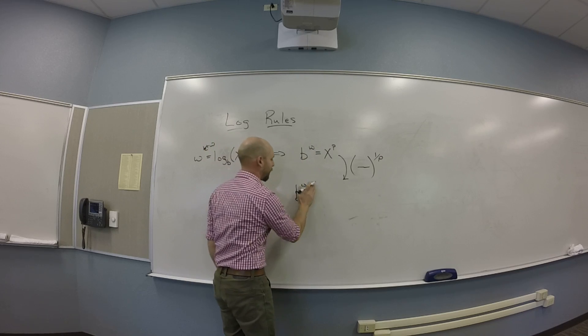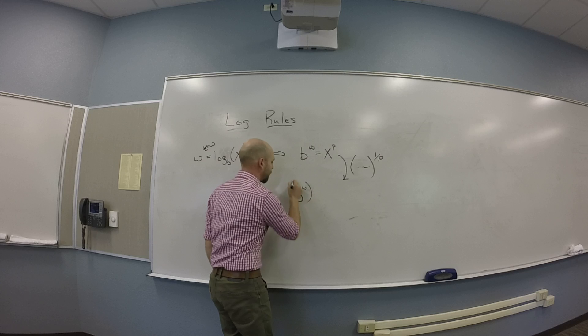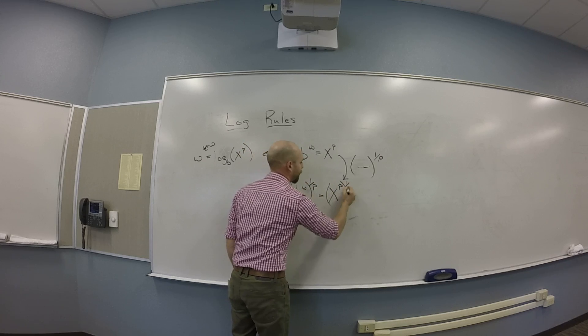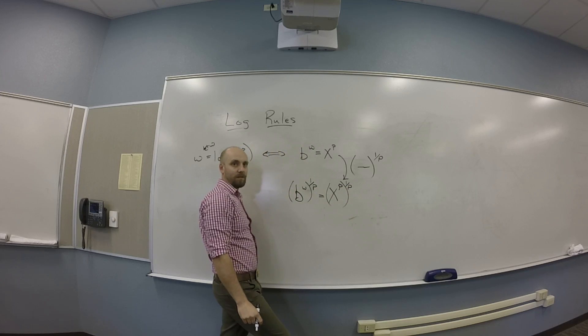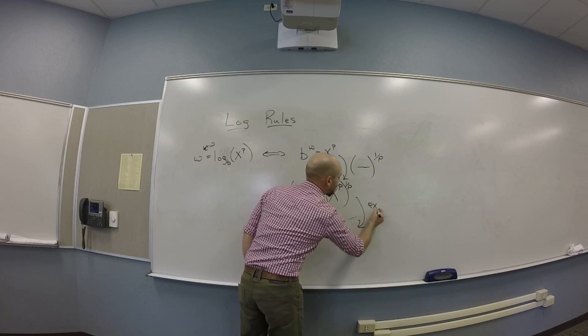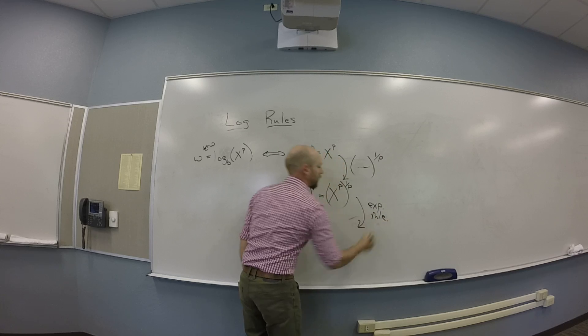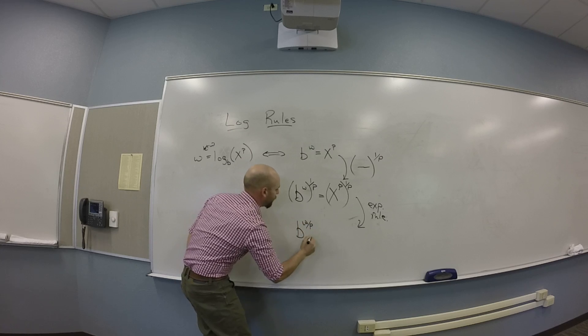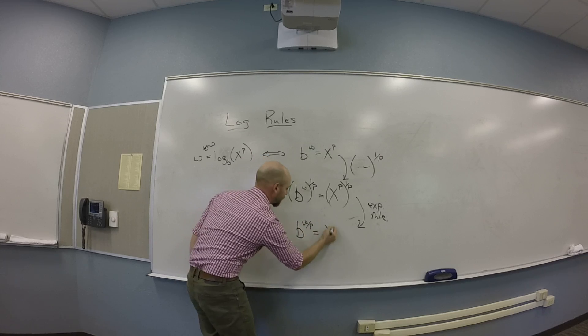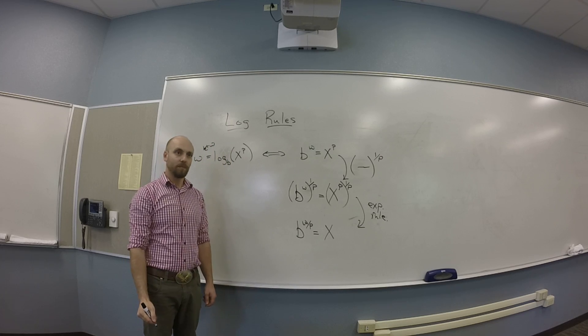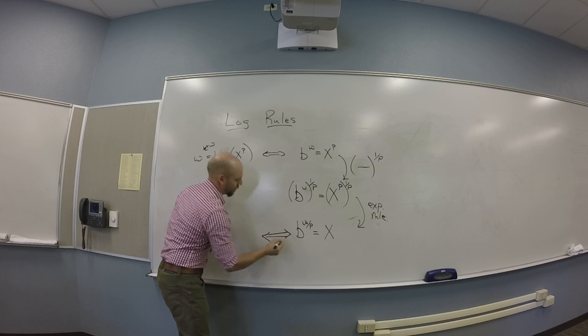So I got b to the w to the 1 over p is x to the p to the 1 over p. And then I multiplied the powers. So this is an exponent rule. And when I do that exponent rule, I get b to the w over p is x. You guys with me on that?